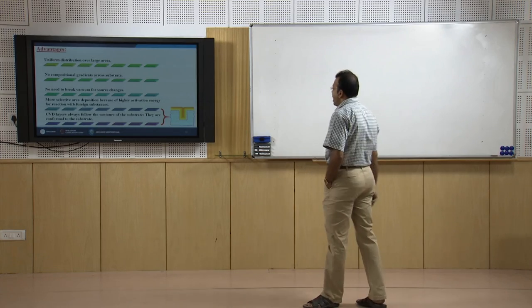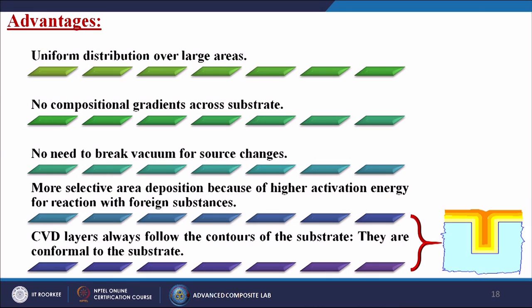Advantages of CVD include: uniform distribution over large areas, no compositional gradients across substrate, no need to break vacuum for source changes, more selective area deposition due to higher activation energy for reaction with foreign substances, and CVD layers always follow the contours of the substrate — they are conformal to the substrate itself.